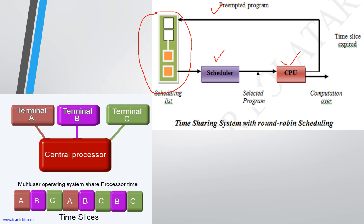For example, suppose three programs are ready: A, B, and C. In the first time slice, program A gets executed. In the second time slice, program B is executed. In the third time slice, program C gets executed. After the execution of all three programs, the chance is again given back to the first process A. Once the time slice gets expired, then B can execute, then C can execute.